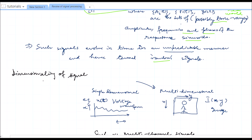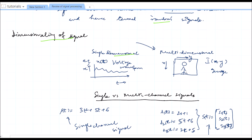Next, we consider the dimensionality of the signal — whether the signal depends on a single variable, which is called a single-dimensional signal, like a voltage waveform x(t) that depends only on time. A multidimensional signal depends on two or more independent variables, like image intensity I(x, y), which depends on coordinates x and y, where x is the vertical coordinate (row number) and y is the horizontal coordinate (column number). So this is a 2D space versus the 1D space.